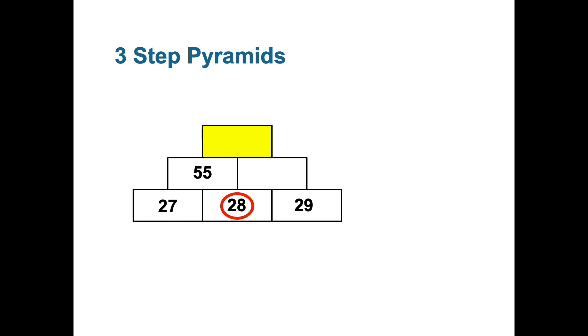And similarly 28 and 29 have to be added together to give the answer in the box above them. And 28 plus 29 is 57. Moving up a row now we know that 55 and 57 have to add together to give us the final answer. And 55 plus 57 is 112.